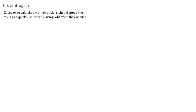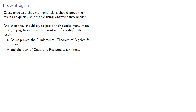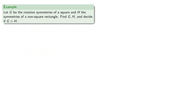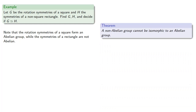Gauss once said that mathematicians should prove their results as quickly as possible using whatever method they need, and then they should try to prove their results many more times to improve the proof and possibly extend the result. Gauss proved the fundamental theorem of algebra four times, and the law of quadratic reciprocity six times. Euler had a similar record with the Euler-Fermat theorem, giving four proofs over the course of his career. This means that any time we prove a result, it's worth going back and asking how we could have done it differently. Taking another look at our two groups, we might note that the rotation symmetries of a square form an abelian group, while the symmetries of a rectangle are not abelian, and we know an abelian group and a non-abelian group can't be isomorphic. So G cannot be isomorphic to H.